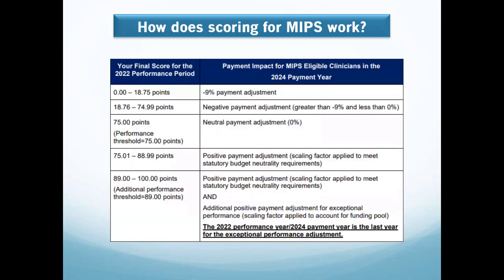Once you determine you are eligible and want to start reporting, you need to know how MIPS scoring works. Scoring is done throughout the year — for 2022, your score is dependent on your performance during 2022. You receive points from 0 to 100, and according to those points you get either an incentive, a deduction, or a neutral payment adjustment. This payment adjustment is applied two years after the performance year, so for 2022 it will be applied in 2024.